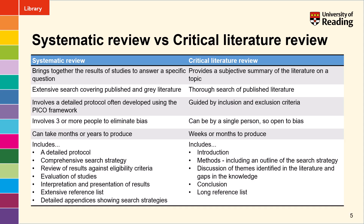This slide goes into a bit more detail about the difference between a systematic review and a critical literature review, because that's where most confusion comes. You will need to talk to your supervisor about which type of study you are doing to make sure you're both in agreement. A systematic review is bringing together the results of existing studies usually to answer a specific question, whereas a critical literature review provides a subjective summary of the literature on a topic and also looks to identify gaps in the knowledge. Both will include an extensive search, but the systematic review may also include grey literature — things not formally published like conference papers, theses, websites, and reports found on the web.